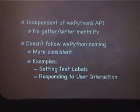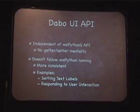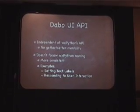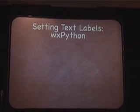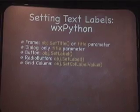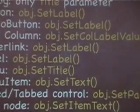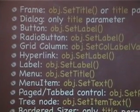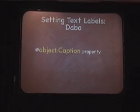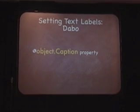If you wanted to just set a piece of text on something — a window has a title bar with text, a button has text, a node on a tree has text, a column header has text — if you want to do that in WX Python, each one of those things has a different way of doing it. I had to keep going back to the documentation: does this use set title, set text, or set label value? So in Dabo's UI API, we just have the caption property. Any object that has a piece of text associated with it, you can set or read it by using the caption property. Makes programming a lot simpler.